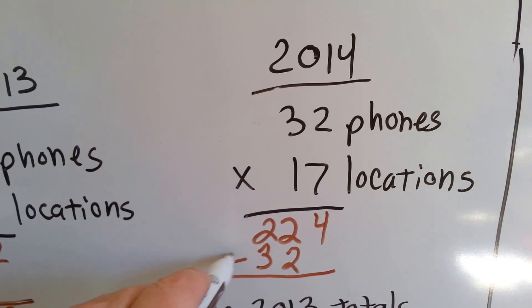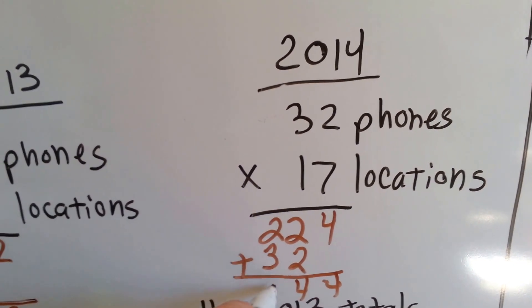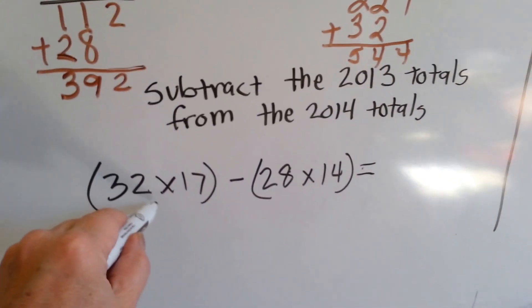We're going to add these up. 4 comes down. 2 and 2 is 4. And 3 and 2 is 5. So now we know that in 2014 it was 544.